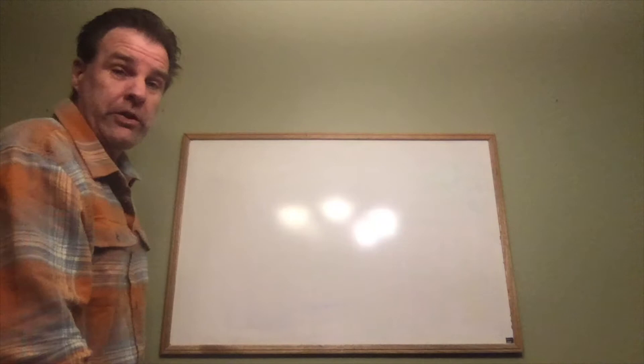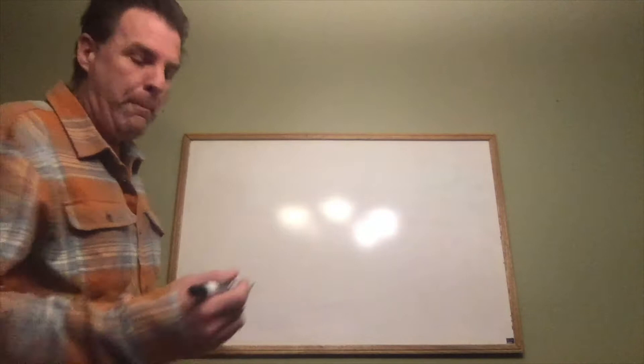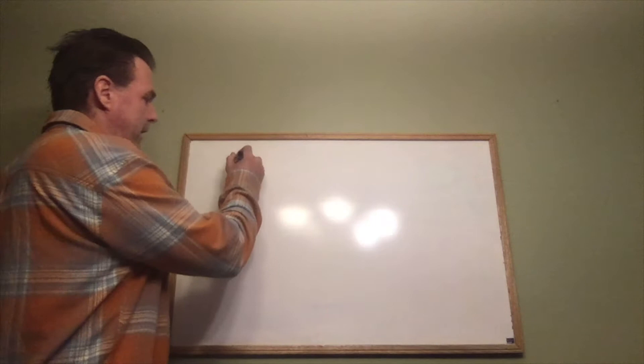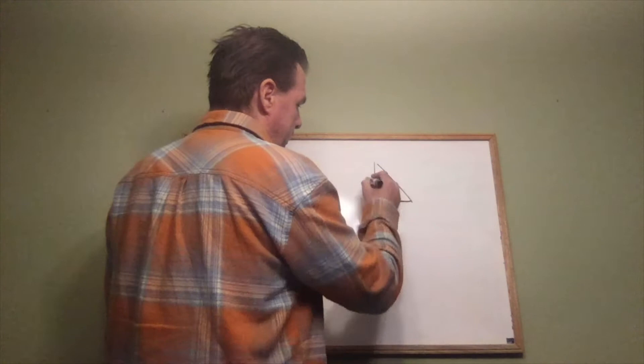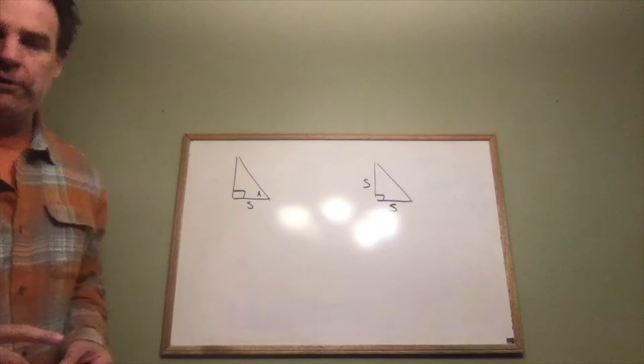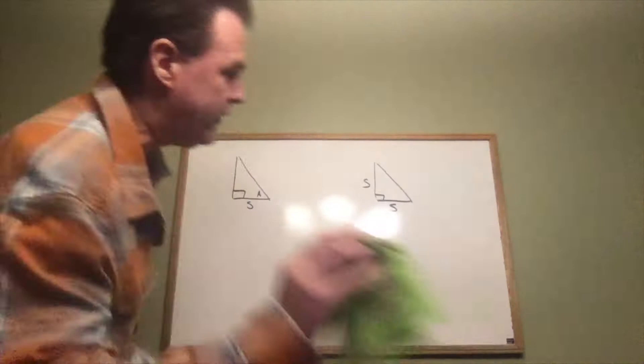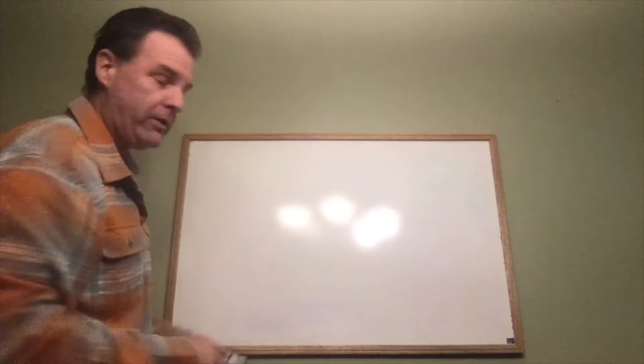In this video I'm going to show you how to solve a right triangle. When we're solving a right triangle, there are two possible cases: one is where we have a side and one of the angles, and the other is where we have two sides. What it means to solve the right triangle is to find all the missing pieces in that triangle.